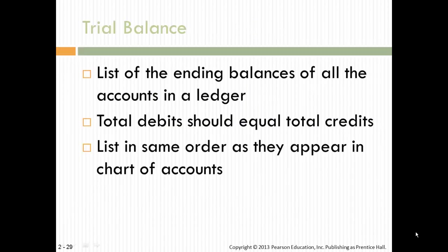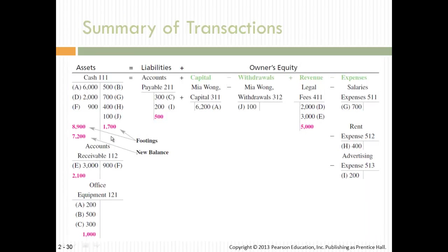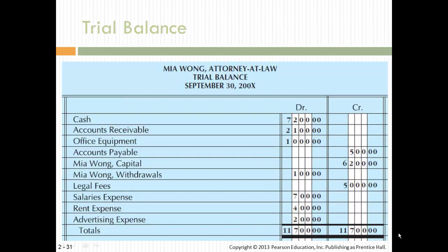Then you prepare a trial balance. A trial balance is a list of all account balances to make sure you're in balance. As an accountant, you don't want to start creating financial statements if your trial balance doesn't balance. The trial balance has footings, and you need the subtotals and account balance totals before creating it. Here, debits and credits both equal $11,700.